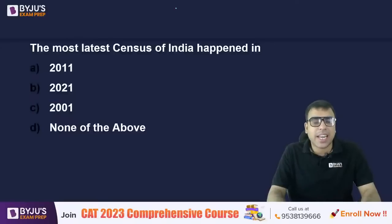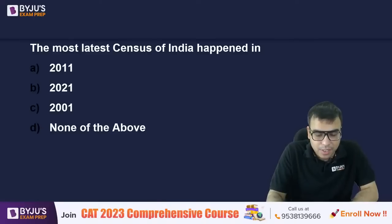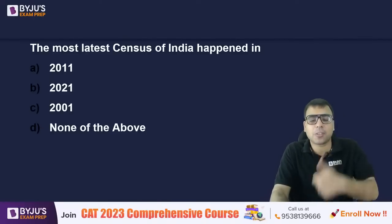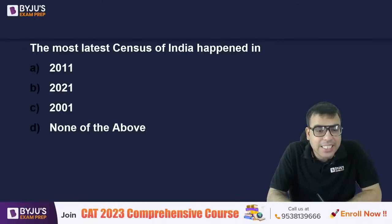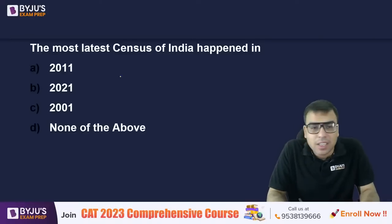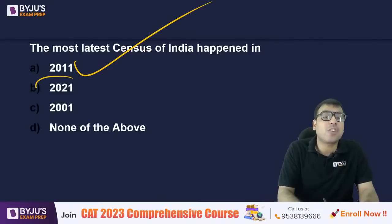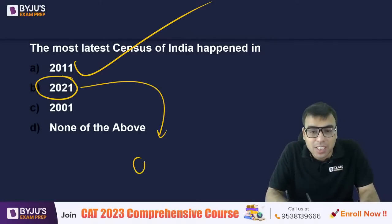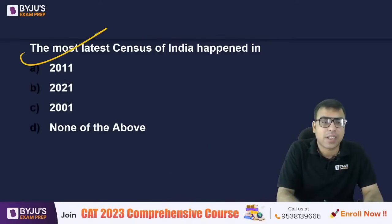What is the most recent census of India — 2011, 2021, 2001, or none of the above? The right answer is 2011. Census is supposed to happen every 10 years, so it ideally should have happened in 2021, but due to COVID-19 — the first and second waves — it was not conducted. So A — 2011 — is the right answer.